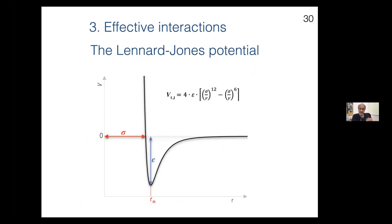Let's talk about effective interactions. The classic picture shows how two inert gas molecules might interact when brought together: an attractive part coming down into a deep well of depth epsilon, and then a hard core so they cannot overlap. Think of two balls that tend to attract each other, coming closer and closer, but at some point they hit and cannot interpenetrate. This is a generic way of thinking about how more or less spherical atoms interact, and is usually used as a reference for most ideas.